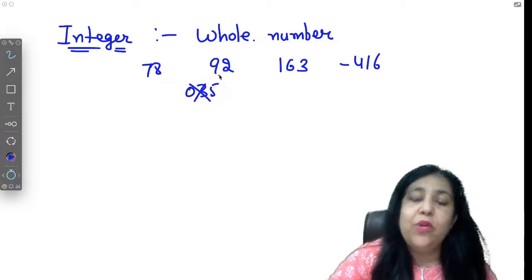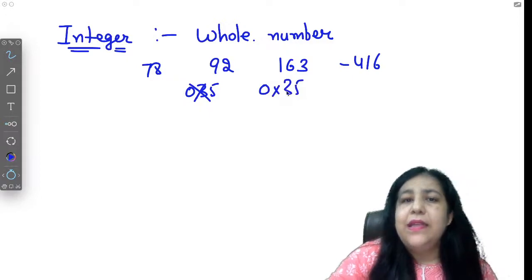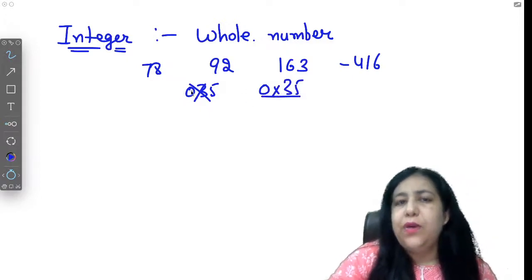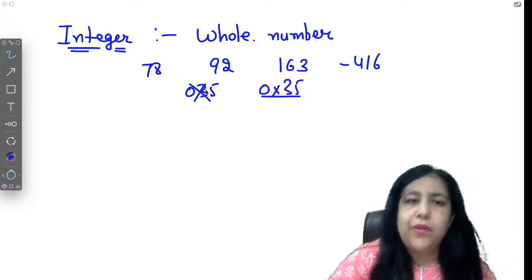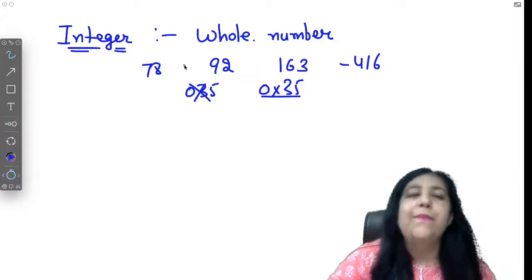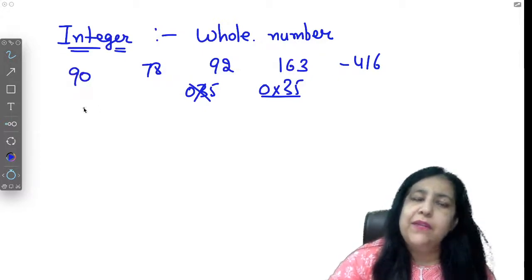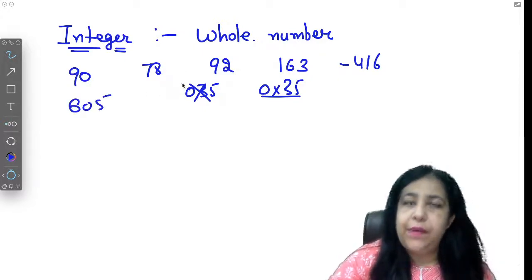This number will never start with zero. Keep this in mind. So 035 is not allowed, because there's a reason behind it which I will tell you in detail in some other video. Zero means the number is octal and zero x means the number is hexadecimal. You don't have to worry about what octal and hexadecimal are right now. Just remember not to start your number with zero. You can use zero anywhere in between, but not at the first place.